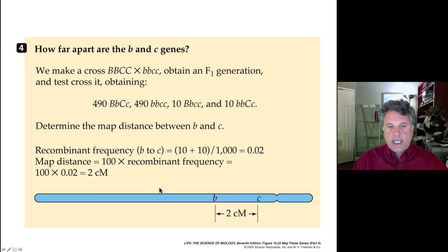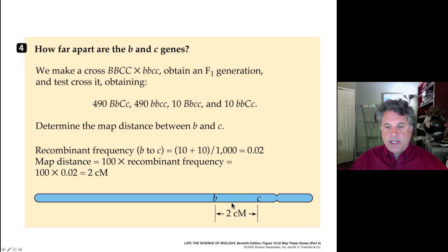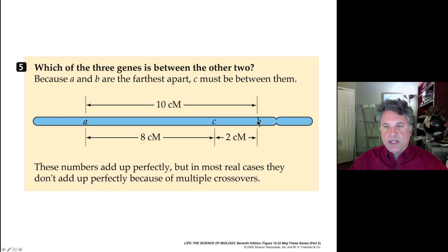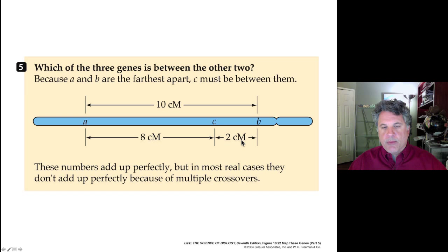So B and C are 2 centimorgans apart, A and B are 10 centimorgans apart, and A and C are 8 centimorgans apart. We can produce an internally consistent map in which A and B are the outermost genes, with C lying between them — 2 centimorgans from B and 8 centimorgans from A. These numbers add up perfectly, but in practice double recombination events can cause us to measure somewhat less than 10 centimorgans for A–B because double crossovers go undetected.